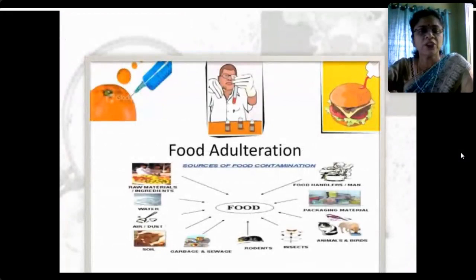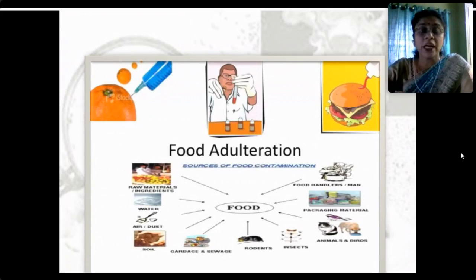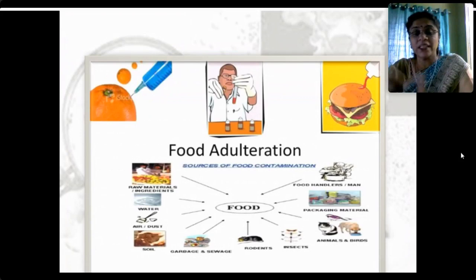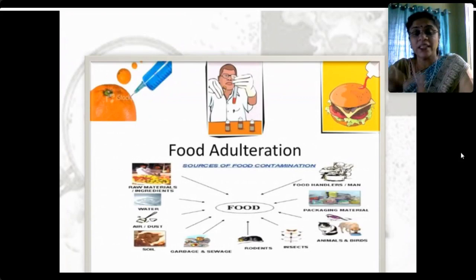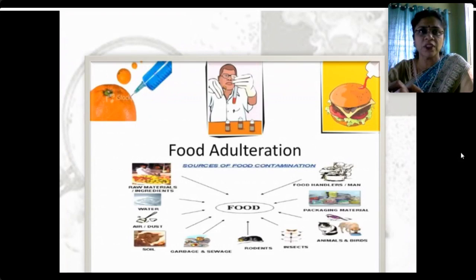Sources of food contamination include raw materials, water, air, dust, soil, excessive use of pesticides, insecticides and chemical manure, garbage and sewage. In winter or monsoon seasons it is more severe. Presence of rodents, insects, animals and birds and their excreta, and packaging material are also sources. Food handlers and humans can transmit contamination — from man to food — in food service operations, restaurants, hotel industries, canteens, school hostels and institutions.